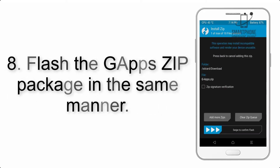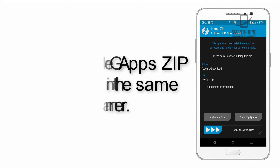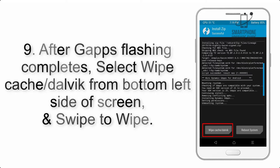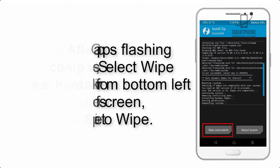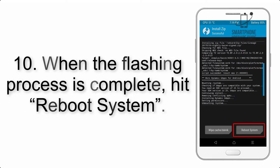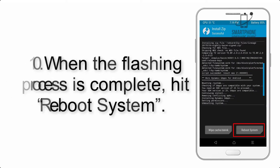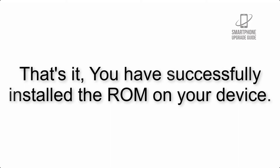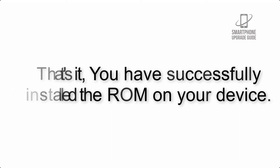Step 8: Flash the GApps zip package in the same manner. Step 9: After GApps flashing completes, select Wipe Cache and Dalvik from the bottom left side of the screen and swipe to wipe. Step 10: When the flashing process is complete, hit Reboot System. That's it — you have successfully installed the ROM on your device.